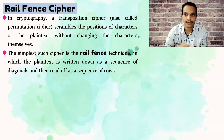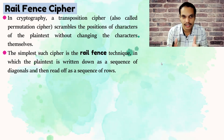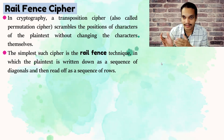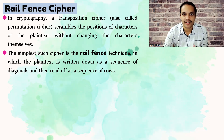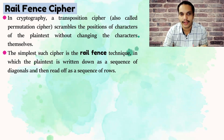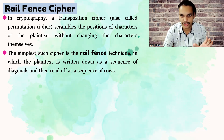Hi everyone, welcome back. In the last video we discussed substitution techniques where plain text letters were replaced with something else to create ciphertext. In this video I'm going to focus on the other way of creating ciphertext, which we call transposition ciphers. In cryptography, a transposition cipher is also called a permutation cipher, which scrambles the positions of the characters of the plain text without changing the characters themselves.